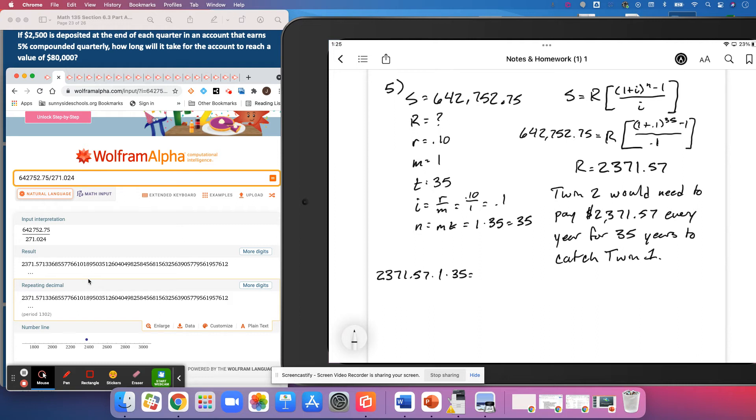And so we've got 2,371.57 times 35, basically. And that's going to give us $83,004.95. So his total investment is $83,004.95.